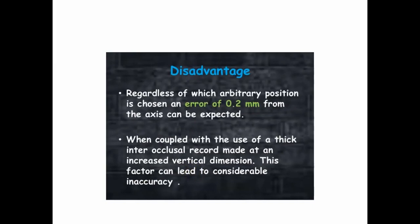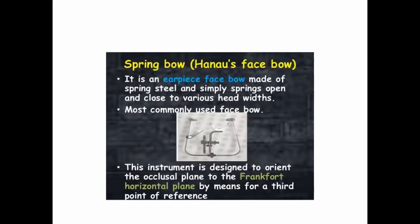The disadvantage is that because of the arbitrary position chosen, an error of 0.2 millimeter from the hinge axis can be expected. When coupled with the use of a thick interocclusal record made at an increased vertical dimension, it can lead to some considerable inaccuracy.